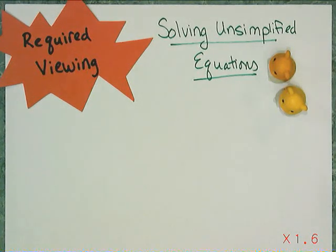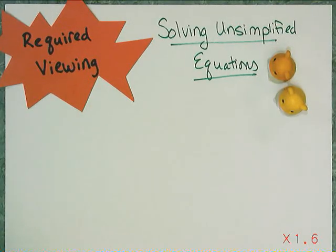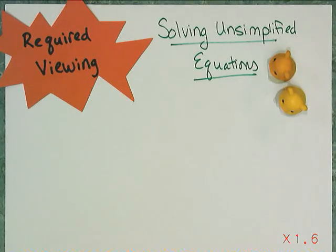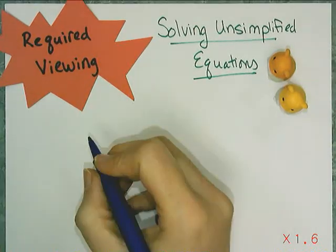In this lesson, we're going to talk about solving unsimplified equations. An unsimplified equation means there are parentheses in there, or there are multiple instances of the unknown showing up, so that it looks like you have to distribute or combine like terms before you can turn it into a two-step equation and then use your properties. So let's look at some examples.